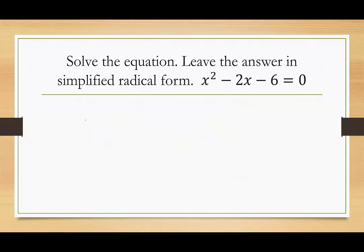So let's apply our quadratic formula. We want to solve the equation and leave the answer in simplified radical form if needed. It does say we're going to use the quadratic formula, but if it's factorable, factoring will always be easier than any other method. However, this one is not factorable — the target product is negative 6, the target sum is negative 2, that's not going to work.